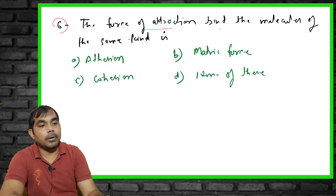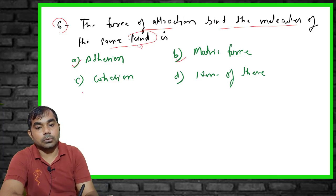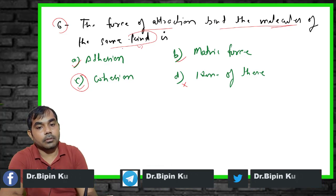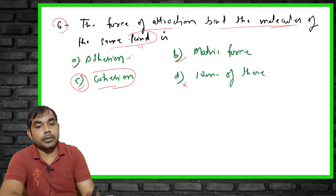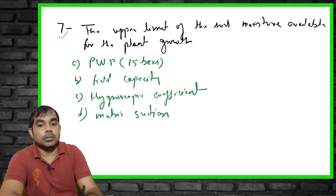The sixth MCQ: what is the force called when it attracts molecules of the same kind? Options include adhesion, matrix force, cohesion, and none of these. The right answer is cohesion. When similar kinds of molecules attract each other, that force is called cohesive force. When different molecules — like water binding with soil particles — attract each other, that is called adhesion force.